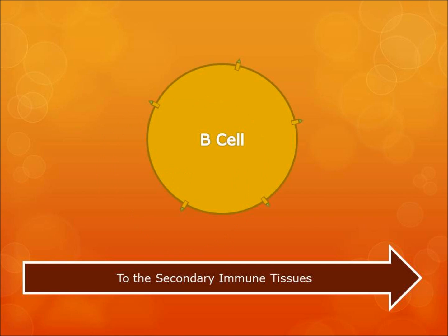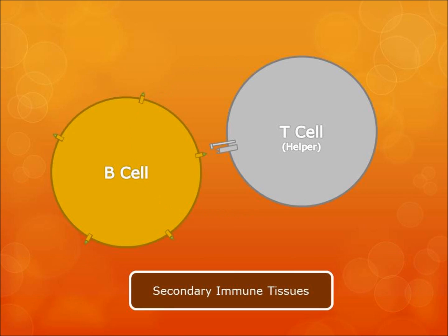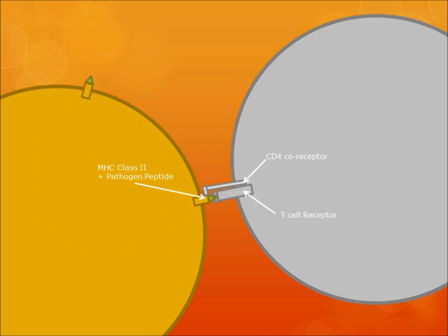The B cell then travels back to secondary immune tissues like the lymph nodes or spleen, where it reacts with helper T cells. The MHC binds to the T cell receptor and the CD4 coreceptor, which interact together to recognize that the B cell is presenting an MHC class II molecule with a peptide on it. Then the CD40 ligand on the T cell and the CD40 receptor on the B cell bind. This interaction provides the B cell with confirmation that the T cell has already encountered the pathogen and that this pathogen is something they should attack.